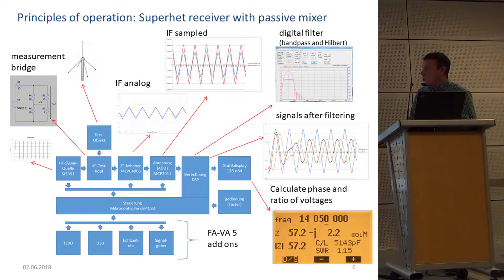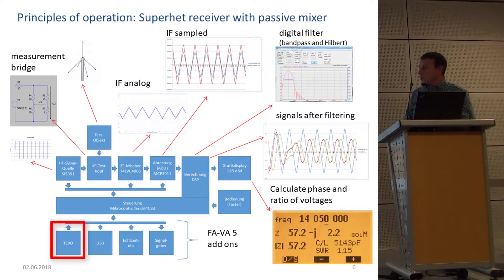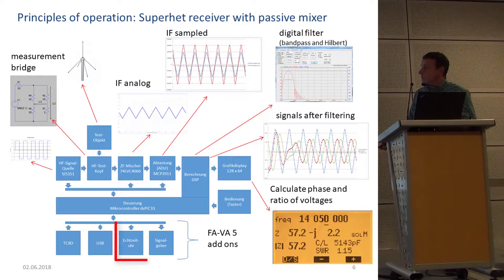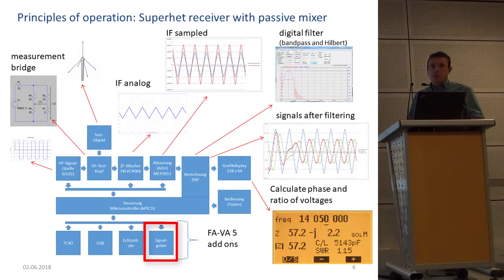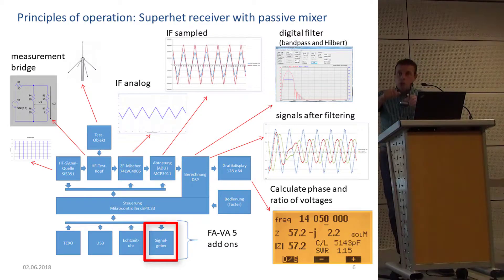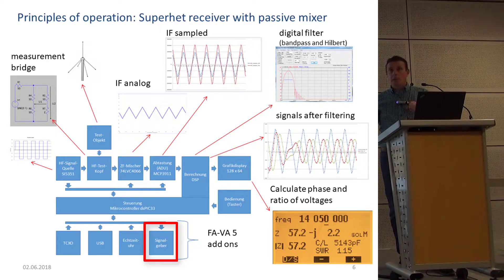The VA5 gained four additional components: we moved to a temperature-controlled crystal oscillator for higher accuracy (0.5 parts per million), a USB interface, a real-time clock, and also a buzzer — because some people said they want to turn and adjust the antenna while simply listening to whether the SWR gets better.